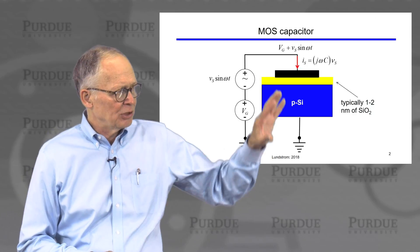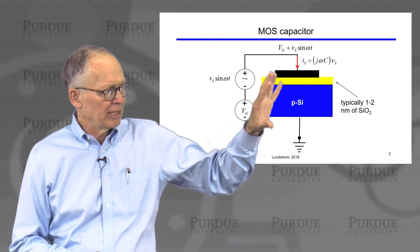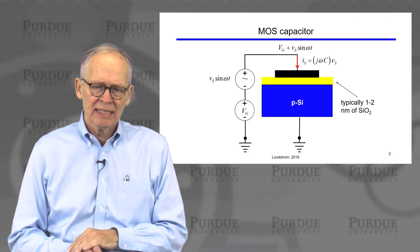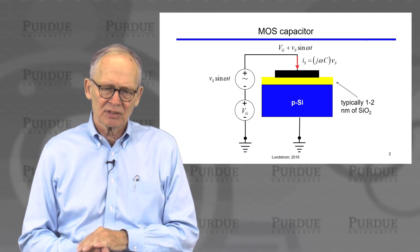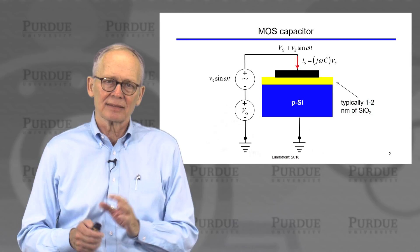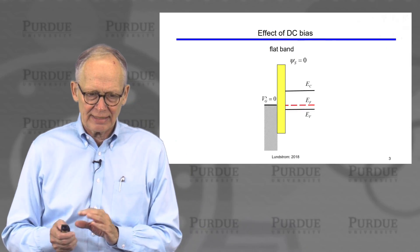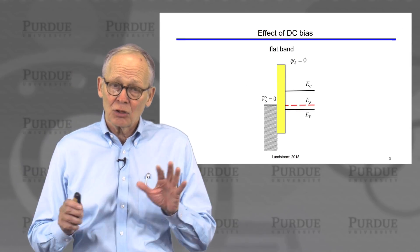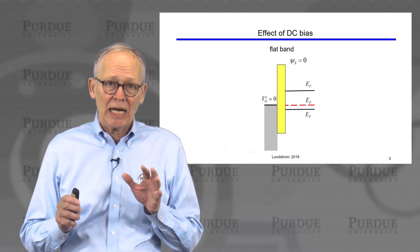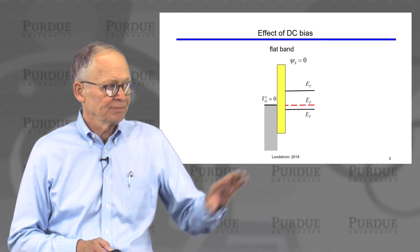For a typical MOS structure, typical numbers are that we may have one to two nanometers thickness of SiO2, just to get us calibrated into what's real. So we understand how the DC bias affects the MOS capacitor.